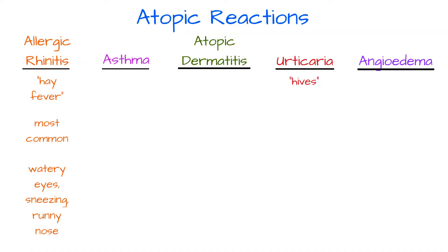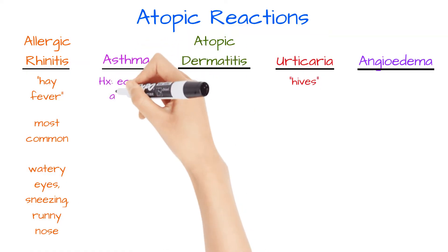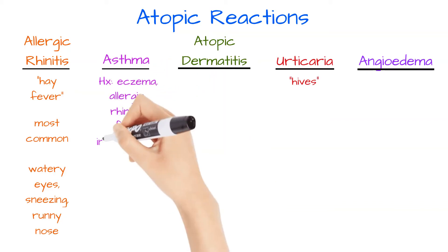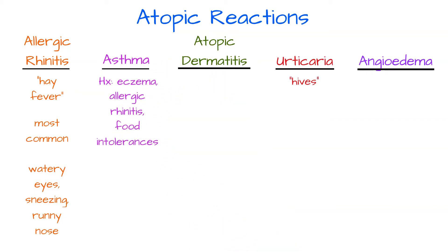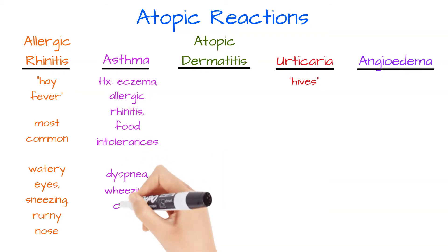With asthma, the patient typically has a history of eczema, allergic rhinitis, or food intolerances. It commonly manifests as dyspnea, or shortness of breath. It can also have wheezing, chest tightness, and coughing.